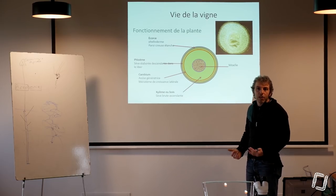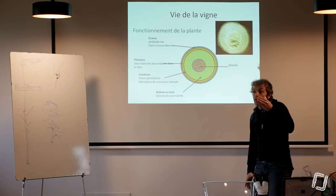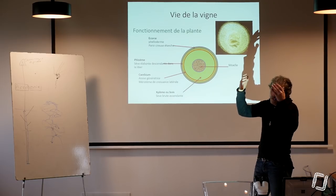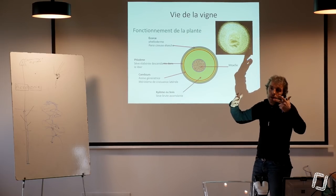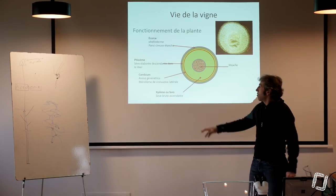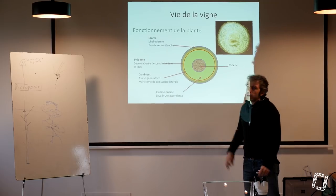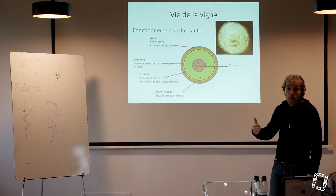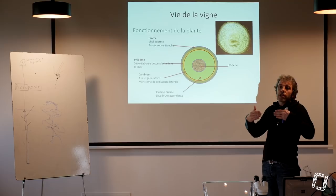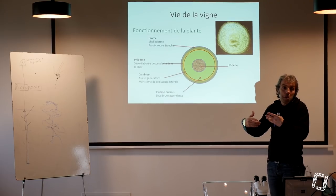Ce libère conduit la sève élaborée descendante. Donc on a deux flux de sève, un flux qui monte et un flux qui descend par consommation du cambium. Ces vaisseaux du libère, tous les ans, arrivés l'hiver, meurent et se retrouvent éjectés sur l'extérieur et se transforment en écorce.